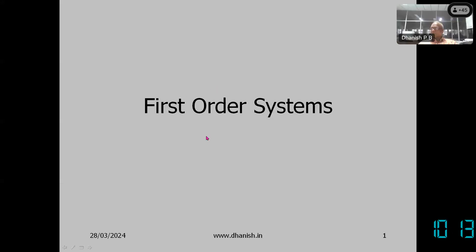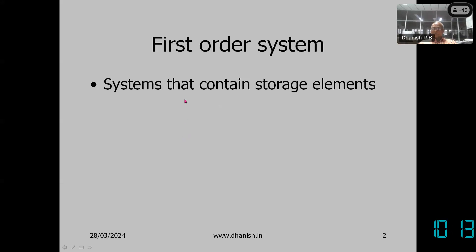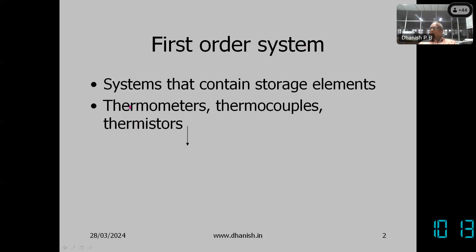First order systems are usually systems that contain storage elements — they can store some energy. Because energy is stored, it takes some time for the system to respond. Thermometers, thermocouples, and thermistors — such temperature measuring instruments — are modeled as first order systems.